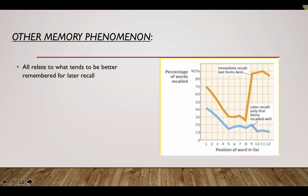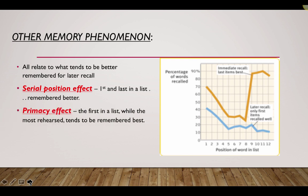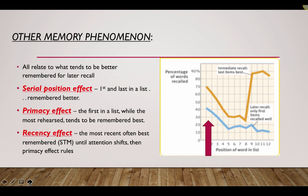Some other memory phenomenon all relate to what tends to be better recalled later. The serial position effect. When we're trying to remember a list of terms or a list of names or people's names, we tend to remember, let's say ten people introduced themselves, the first person and the last person in a list tend to be the best remembered. Now this relates to the primacy effect, or the first term or name in a list, while it's the most rehearsed, tends to be the best remembered. So the first term in a list is remembered better than the last, because it's rehearsed the longest. And that's if we're asked to remember something later. If we're asked to remember something immediately, the recency effect tends to take place. We tend to remember the word that's still in our long-term memory, but as this fades, the primacy effect tends to rule.